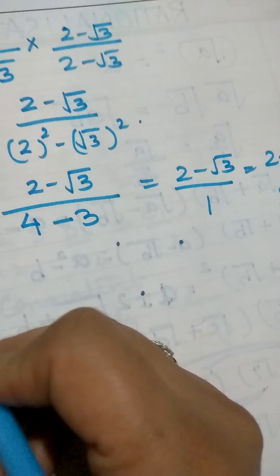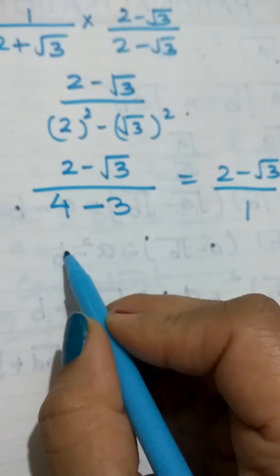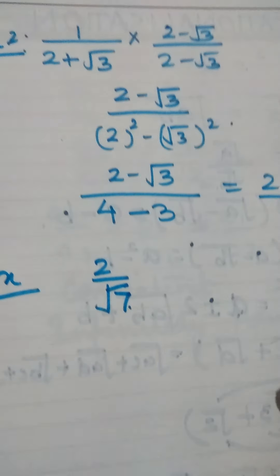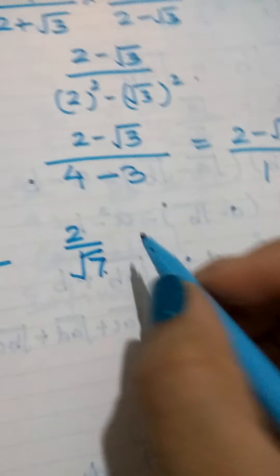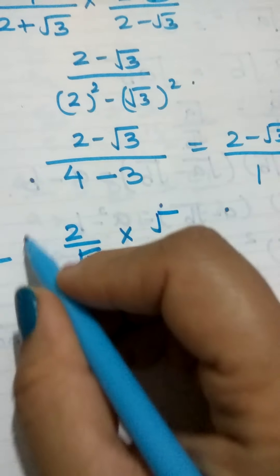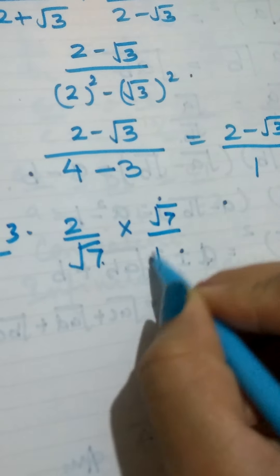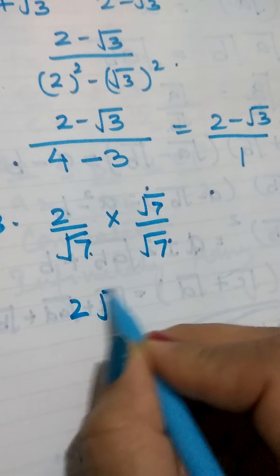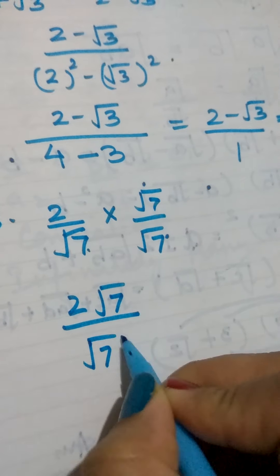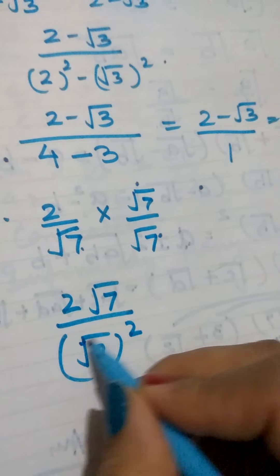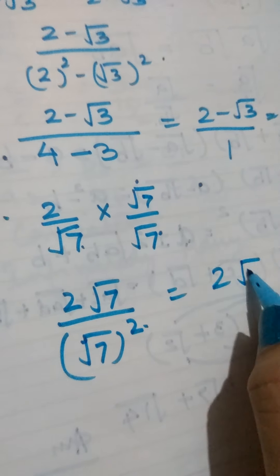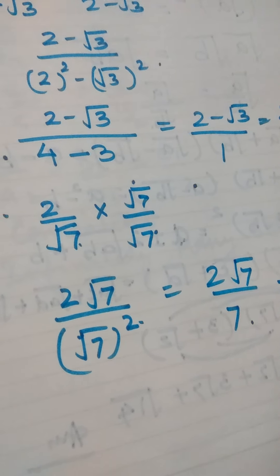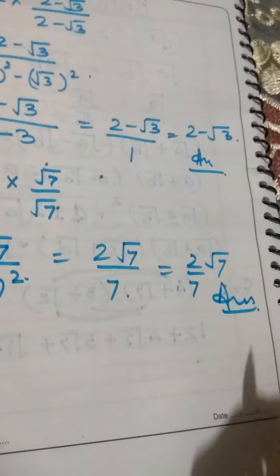Another example where we don't have a binomial but just a simple monomial. If we have 2/√7 and we have to rationalize it, we multiply by √7/√7. This makes the denominator √7 squared, so the square root gets cancelled, giving 2√7/7 as the answer.